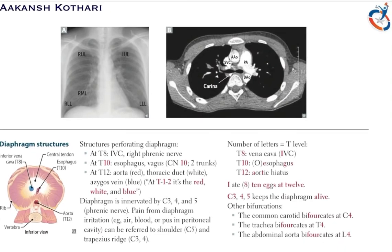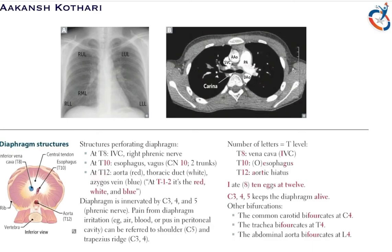The diaphragm is a key structure in inspiration and expiration. Various structures perforate it at different vertebral levels. At T8: the inferior vena cava and right phrenic nerve. At T10: the esophagus and cranial nerve 10 (vagus nerve). At T12 (aortic hiatus): three structures pass through — the aorta (red), the thoracic duct (white), and the azygous vein (blue) — remembered as red, white, and blue.